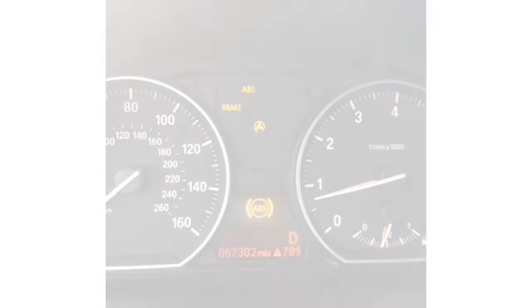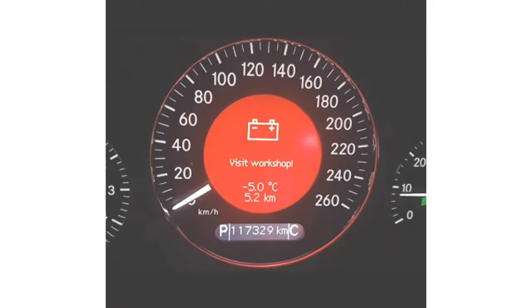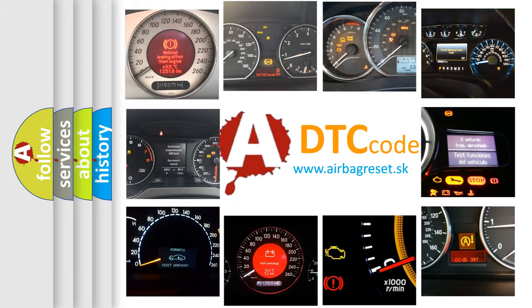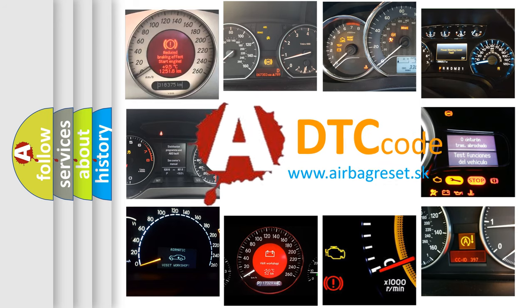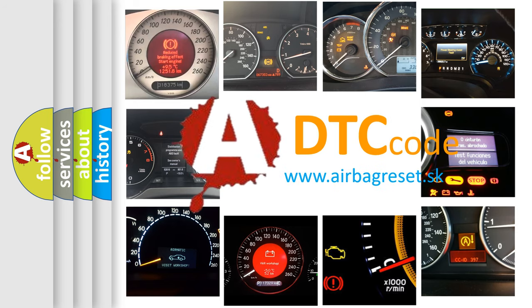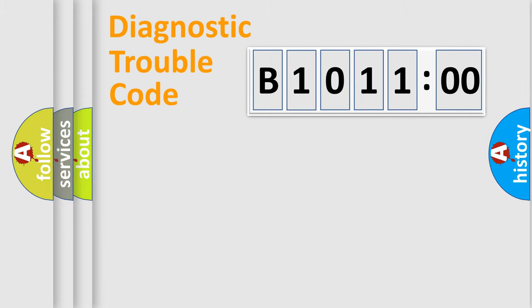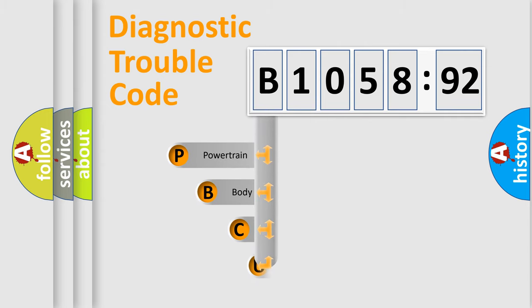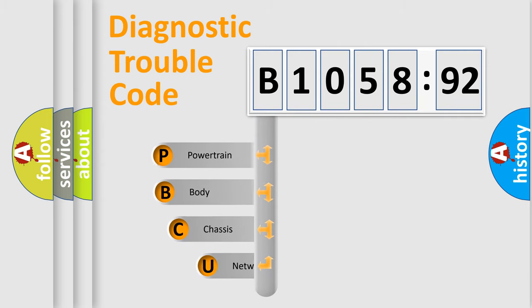First, let's look at the history of diagnostic fault code composition according to the OBD2 protocol, which is unified for all automakers since 2000. We divide the electric system of an automobile into four basic units: Powertrain, Body, Chassis, and Network. This distribution is defined in the first character of the code.